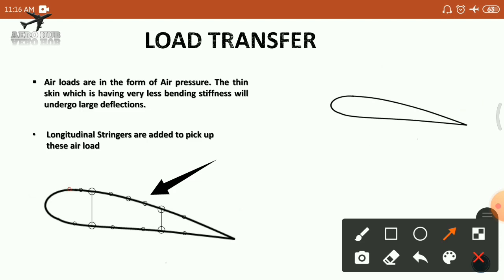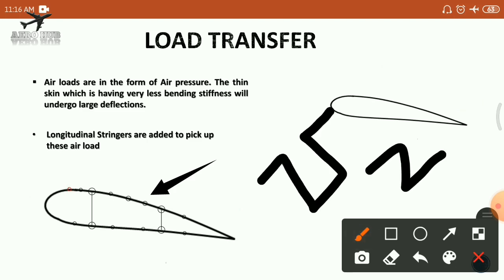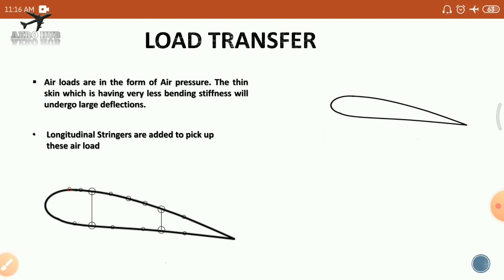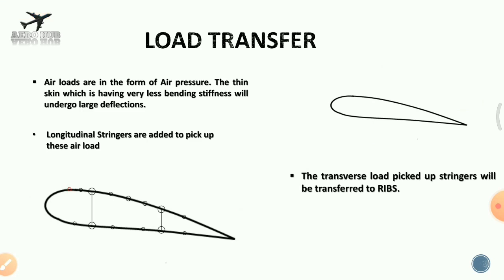The stringers may have different cross-sections, such as angle or hat sections, as discussed in previous lectures. However, stringers have a limited bending stiffness and can only carry a relative amount of bending load. Therefore, the load acting on the stringers must be transferred effectively to the ribs. Ribs are essentially airfoil-shaped sections that provide the aerodynamic shape, and the bending load from the stringers is transferred to them.